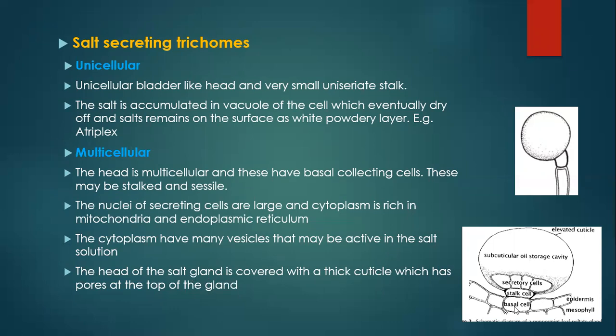The multicellular type of salt glands has different structural components: the mesophyll epidermal cells, basal cells, stalk cells, and secreting cells. The secreting cells are associated with sub-cuticular oil storage cavities. When the plants possess such types of oil glandular trichomes, the main surface of the leaves can become consistently oily.